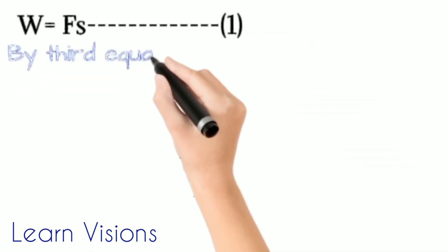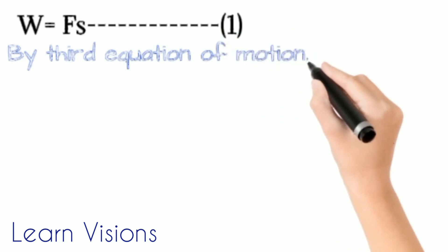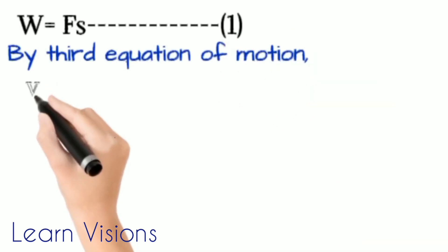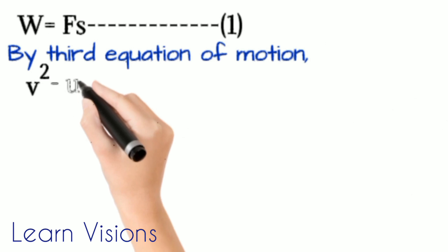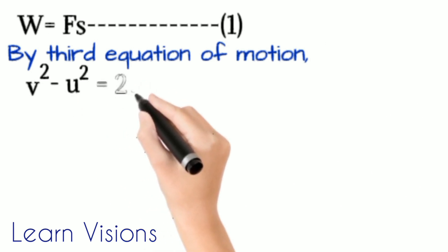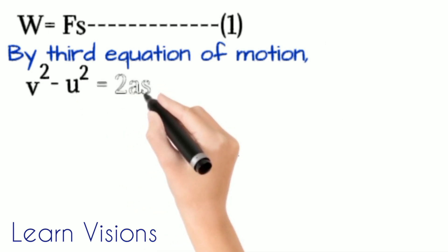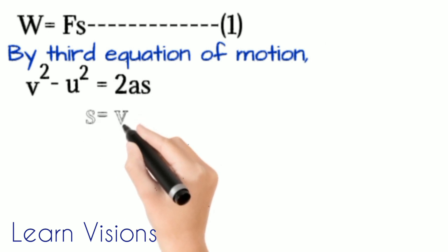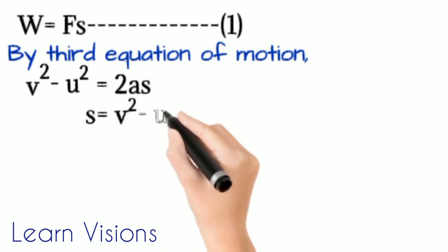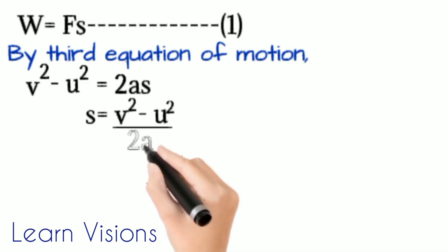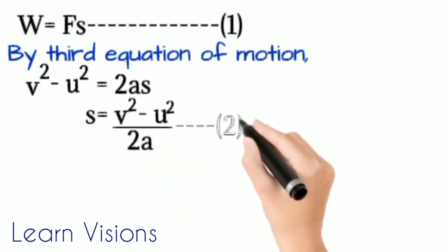Now, by the third equation of motion, v squared minus u squared equals 2as. From here we can find the value of displacement s, which equals v squared minus u squared divided by 2a. This is our equation number 2.